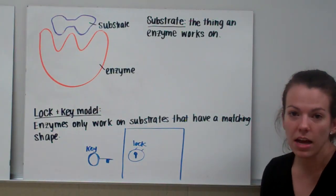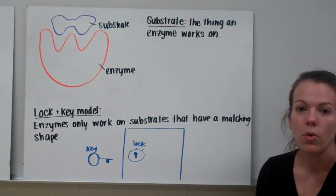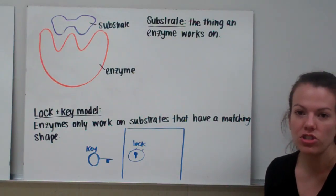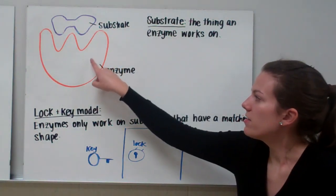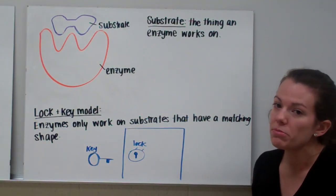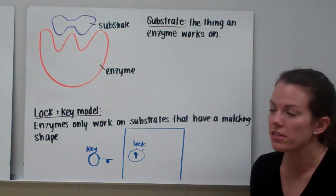So remember that enzymes speed up reactions. Whatever they're working on is called the substrate. So whatever the enzyme is changing is called the substrate. The substrate fits together neatly with an enzyme. Their shapes match. If their shapes don't match, then the enzyme's not going to work on that substrate.